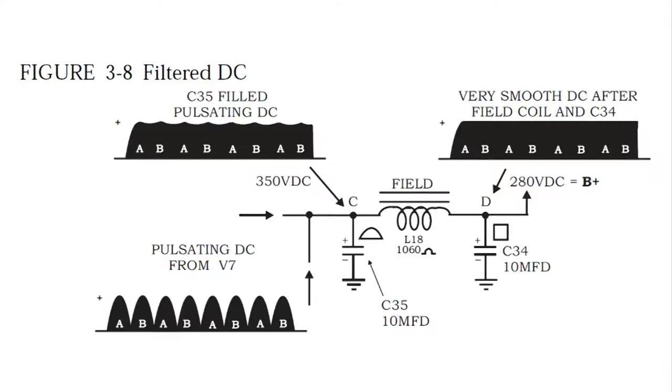So when it passes through that field coil, it's a 1,060 ohms field coil. And there's another filter on the other side, C34. At point D, you can see that it is a very smooth DC, and we have about 280 volts at that point.